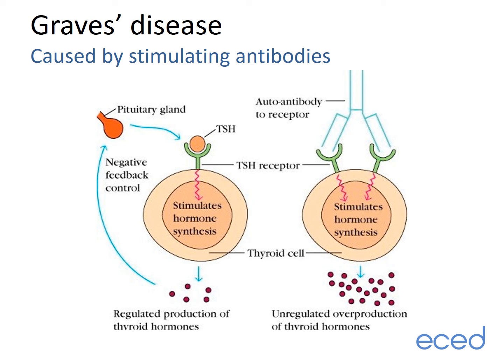The right side of this figure shows how in Graves disease antibodies fool the thyroid cells into thinking that TSH is present, and this results in uncontrolled production of thyroid hormone. On the left is the normal state of affairs.